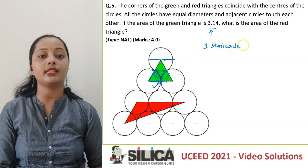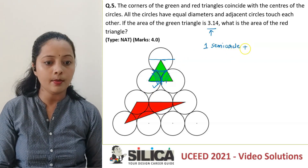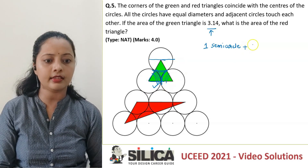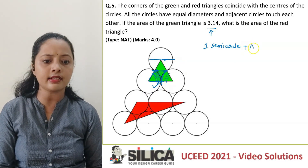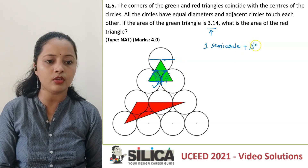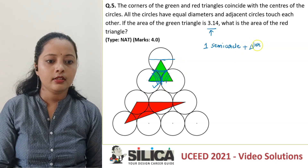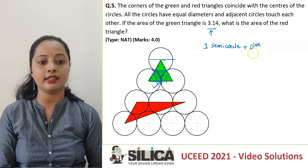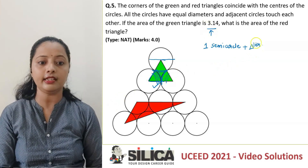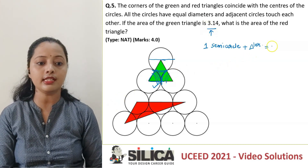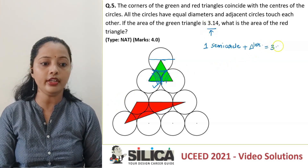So I have one semicircle plus the small triangular structure — the intersection part in the center — and that is equal to 3.14.